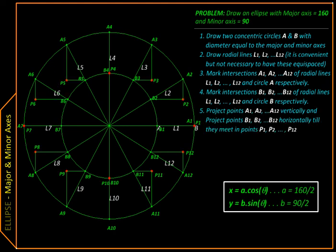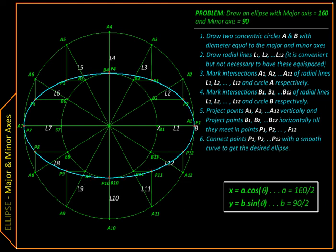And then we will be projecting them horizontally and vertically like we did before. And wherever the projectors meet is going to be the point on the circle. So these points we are going to draw with a smooth curve which is our ellipse.